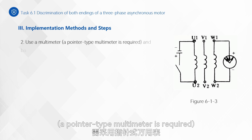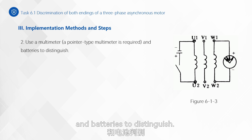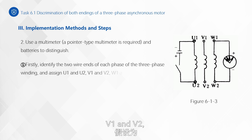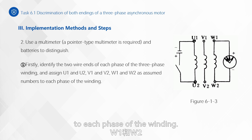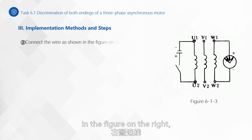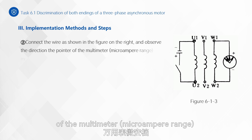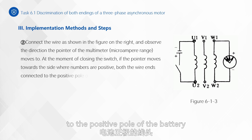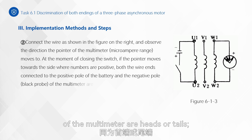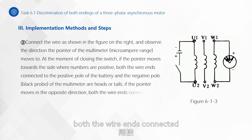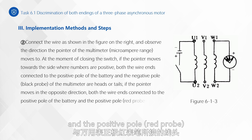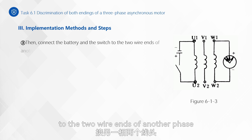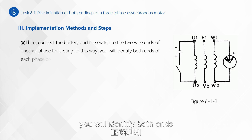Method two: use a multimeter — a pointer-type multimeter is required — and batteries to distinguish. First, identify the two wire ends of each phase of the three-phase winding and assign U1 and U2, V1 and V2, W1 and W2 as assumed numbers. Second, connect the wire as shown in the figure and observe the direction the pointer of the multimeter in the microampere range moves. At the moment of closing the switch, if the pointer moves towards the positive side, both the wire ends connected to the positive pole of the battery and the negative pole (black probe) of the multimeter are correctly identified. Then connect the battery and switch to the two wire ends of another phase for testing. In this way, you will identify both ends of each phase correctly.